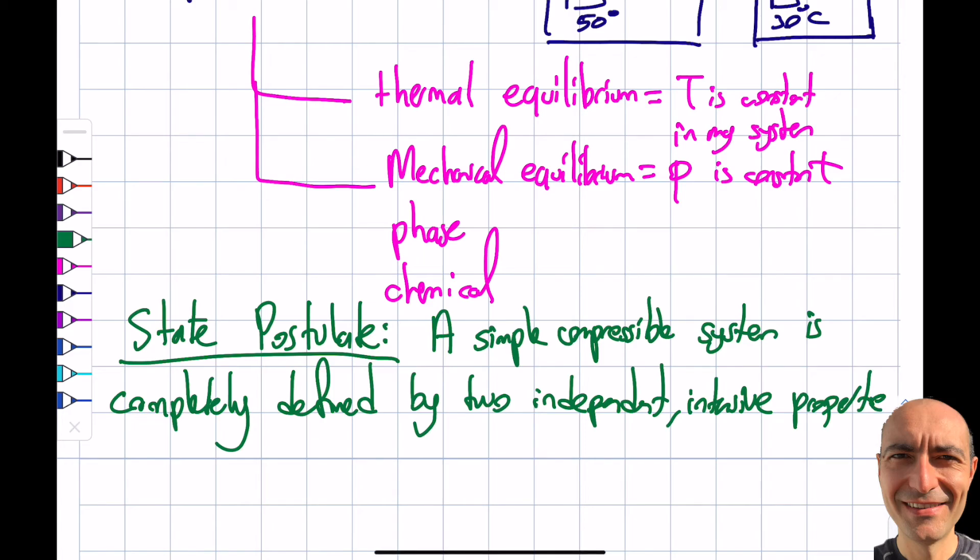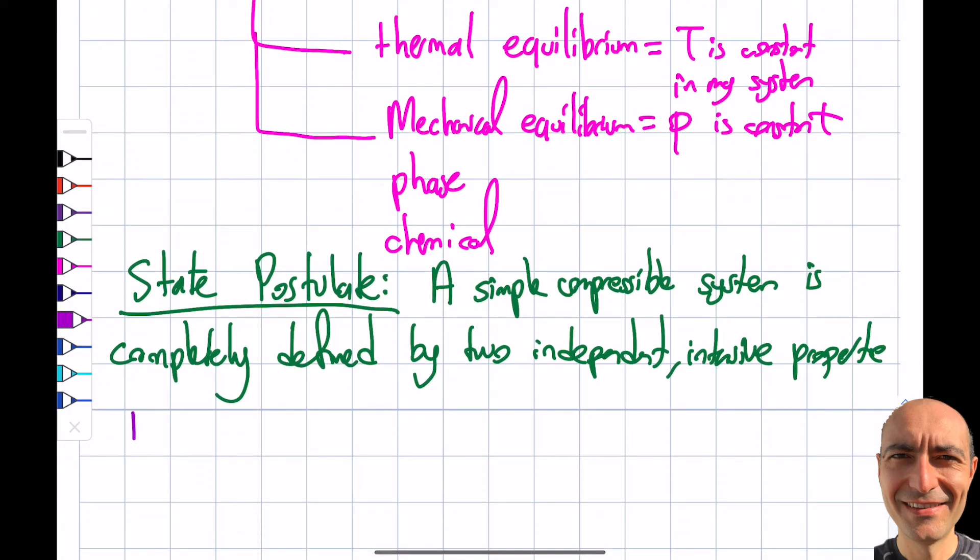In order for me to actually, let's write this: is completely defined by two independent intensive, not extensive, properties. And I want to write an asterisk over here: this is only for one phase systems. I will cover multi-phase systems down the road. So only for single phase systems.